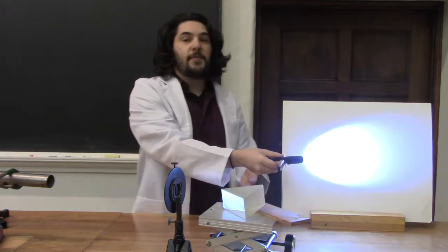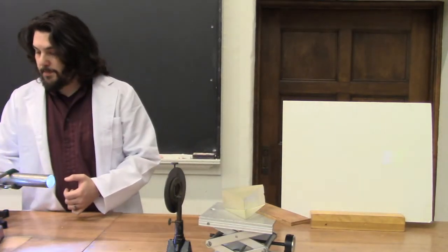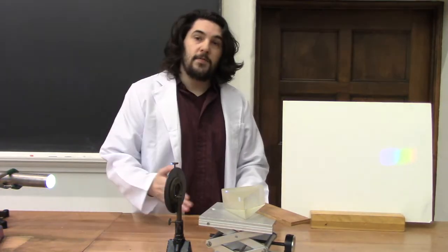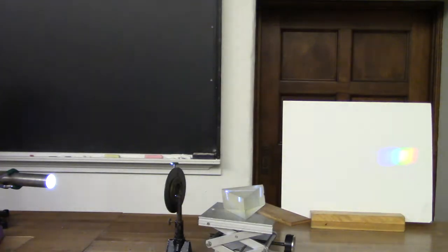White light is made up of waves of every color. So if I shine it through a prism, each of the different colors gets refracted at a different angle, so we can see all the colors that make up this white light.